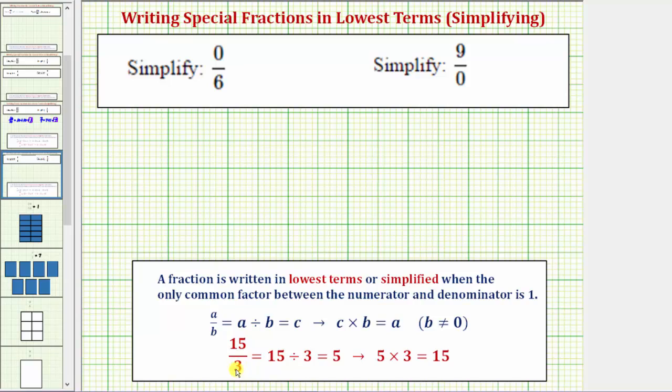So as an example, 15 thirds equals 15 divided by three, which equals five, where this quotient is telling us there are five threes in 15.